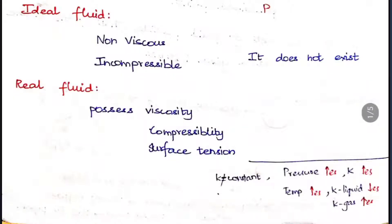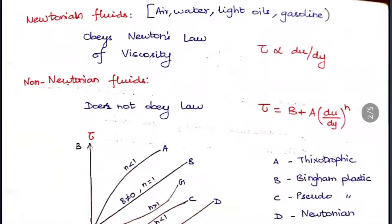Viscosity, compressibility, and surface tension are very important. The next classification is Newtonian fluids and non-Newtonian fluids. Fluids which obey Newton's law of viscosity — tau is proportional to du/dy — we call Newtonian fluids. Examples are air, water, light oils, and gasoline. Non-Newtonian fluids do not obey this law.